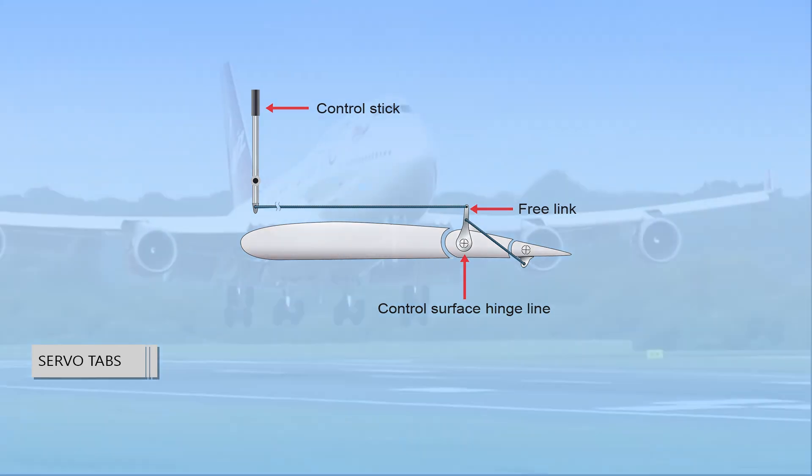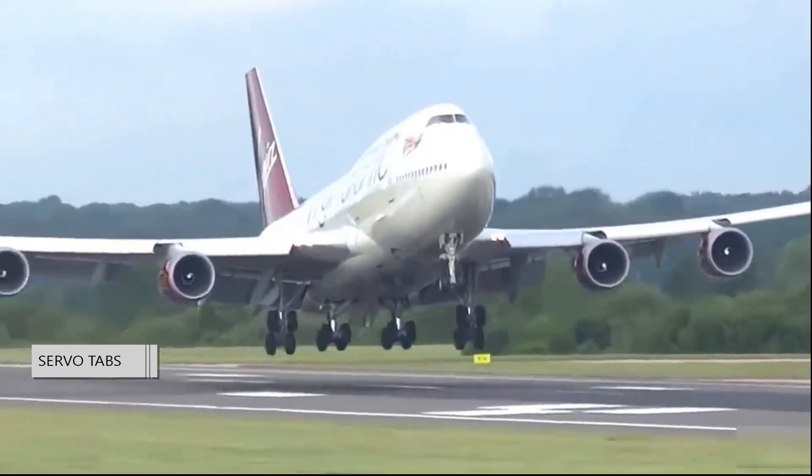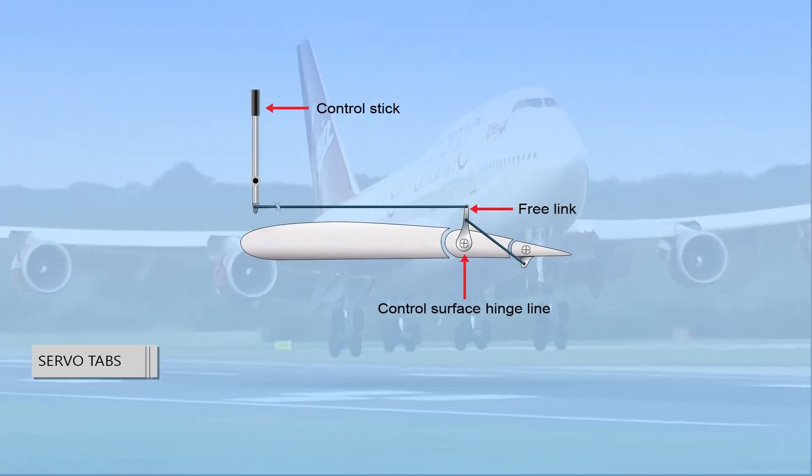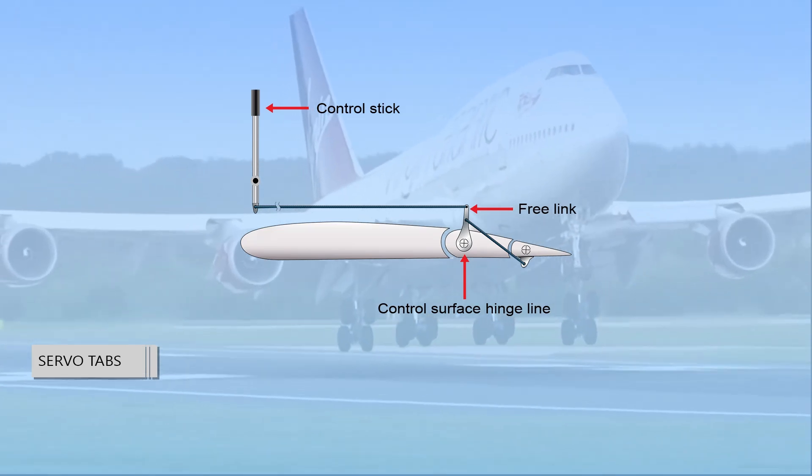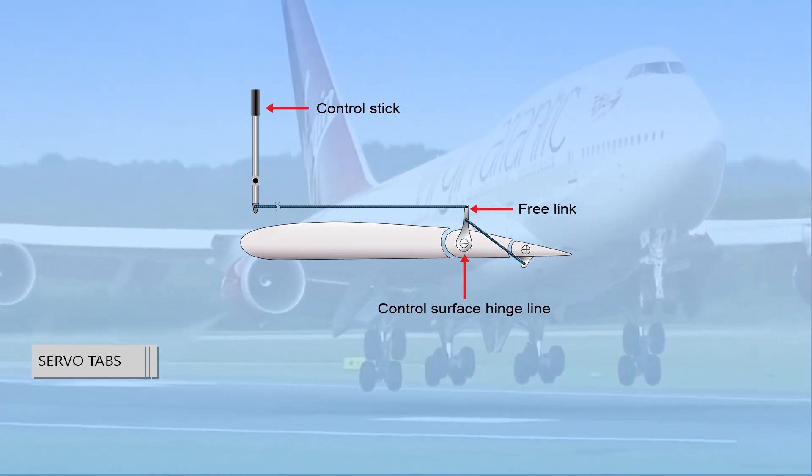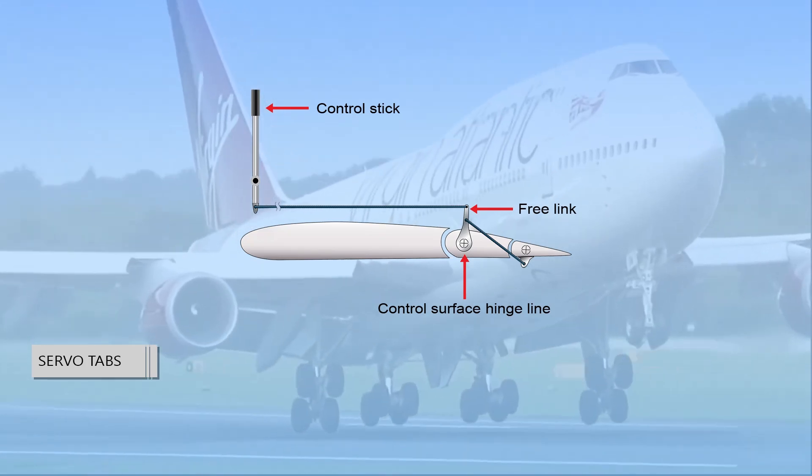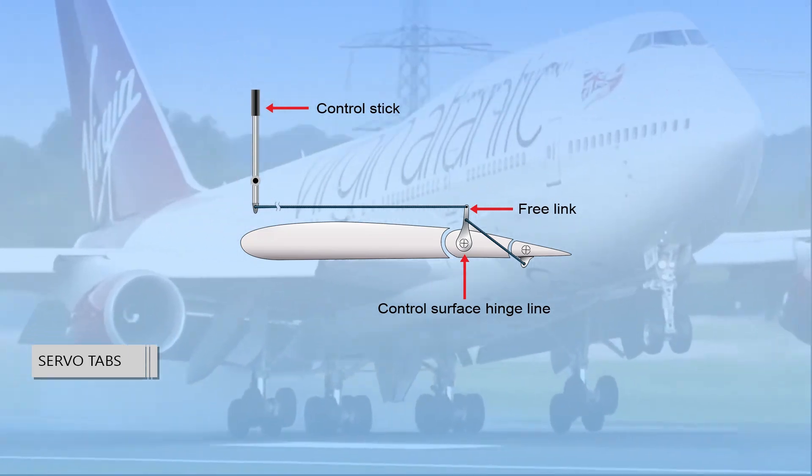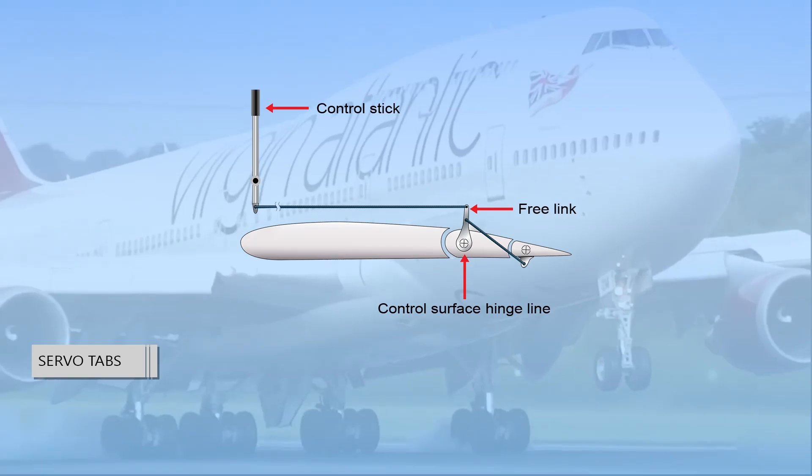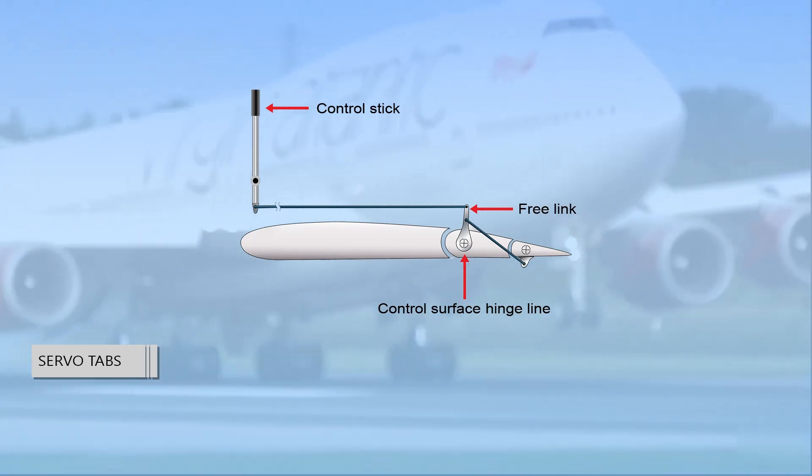Servo tabs are sometimes referred to as flight tabs and are used primarily on large aircraft. They aid the pilot in moving the control surface and in holding it in the desired position. Only the servo tab moves in response to movement of the pilot's flight control, and the force of the airflow on the servo tab then moves the primary control surface.